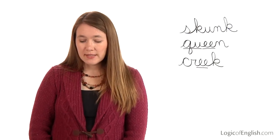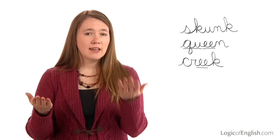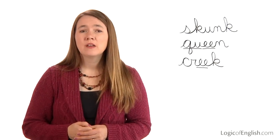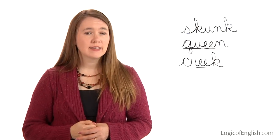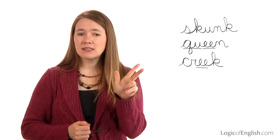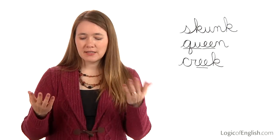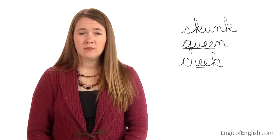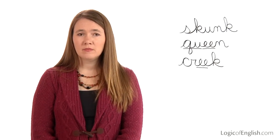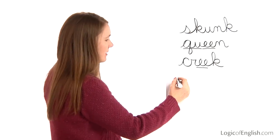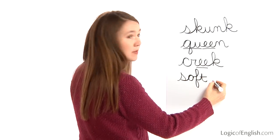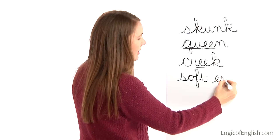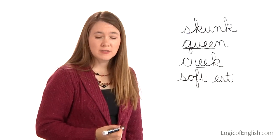Softest. This is the softest blanket. Softest. How many syllables in soft-est? Two. The first syllable is soft: S, o, f, t. The second syllable is est: E, s, t. Go ahead and write softest. S, o, f, t. Second syllable is est: E, s, t. Softest.